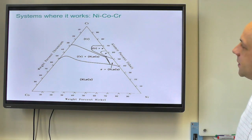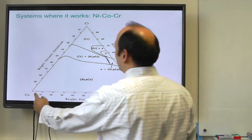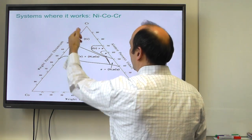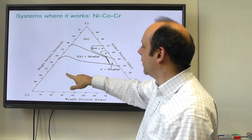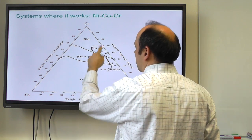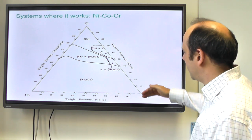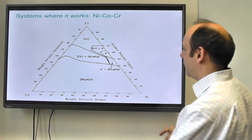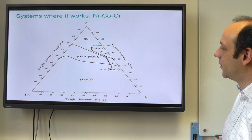Here's a system that works nicely: nickel and cobalt, next to each other and both FCC in the right circumstances — they will dissolve each other completely. Chromium, however, is not the same crystal structure, so you don't get complete solubility. Instead there's a two-phase region between pure chromium and the FCC phase, plus some sigma phases that tend to be brittle in nickel superalloys. So if you're making a nickel superalloy, you can get up to quite a bit of chromium before you start getting into trouble.